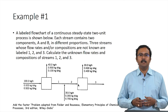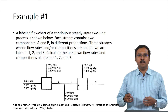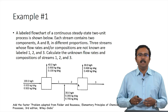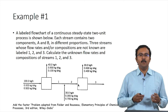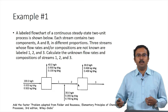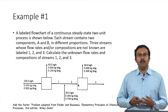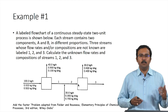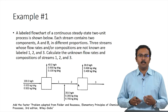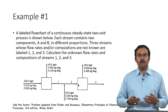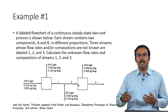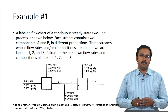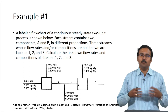The first example: a labeled flow chart of a continuous steady-state two-unit process is shown. Each stream contains two components A and B in different proportions. Three streams whose flow rates and/or compositions are unknown are labeled 1, 2, and 3. The process has one input entering a unit giving two outputs; one output leaves as a product and the other gets mixed with another input before entering unit 2, forming two different product streams.